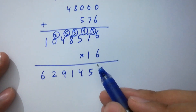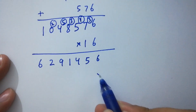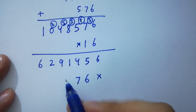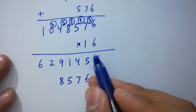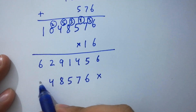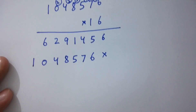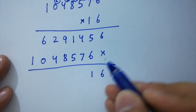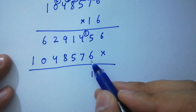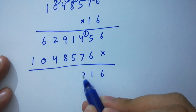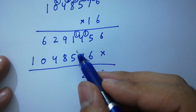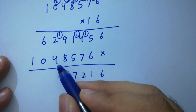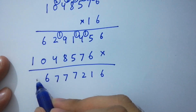Multiplying by 1 gives: 1, 0, 4, 8, 5, 7, 6. Adding the two partial products together digit by digit, we get 16,777,216.